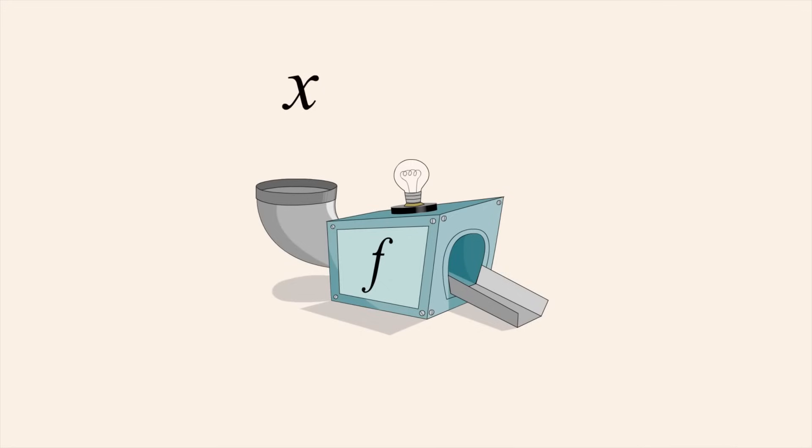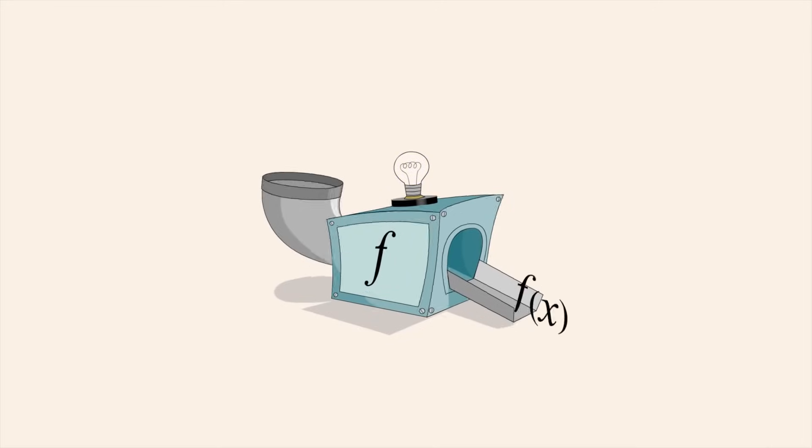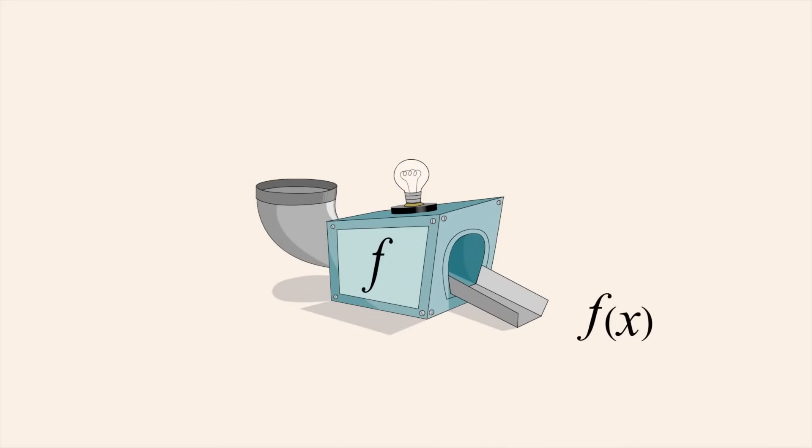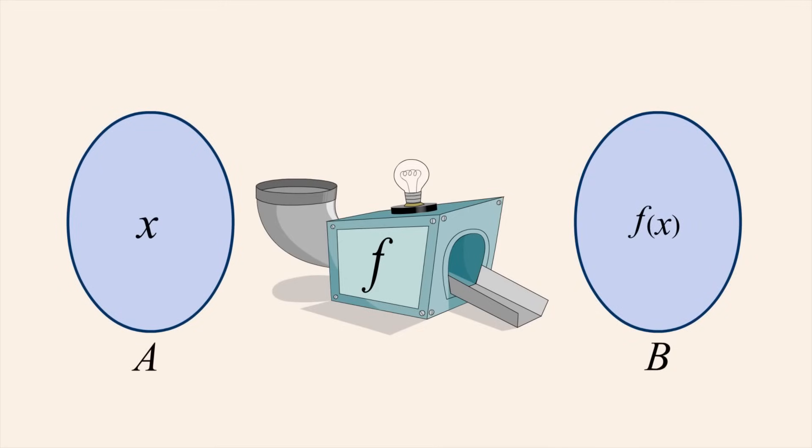If we let x represent any input element, then the output element which function f produces from x is written as f followed by an x in parentheses. We call this f of x. So a function relates elements x from set A to elements f of x of set B.